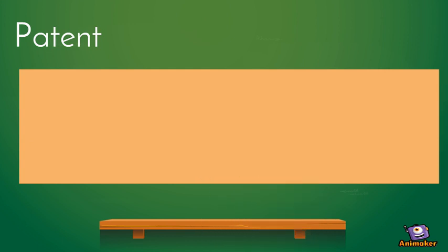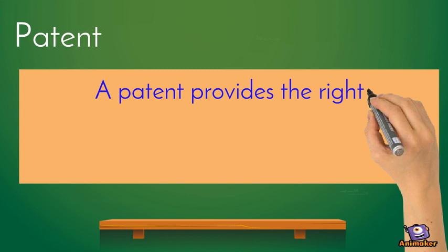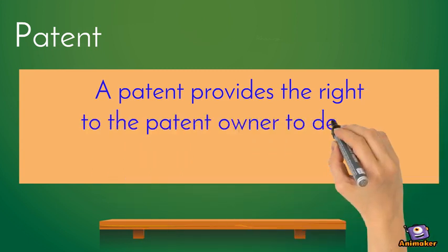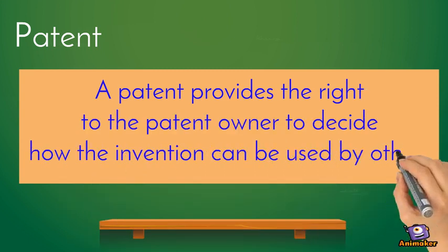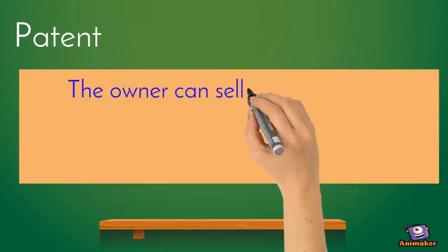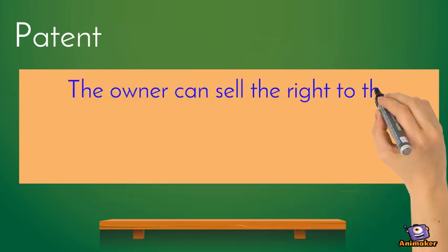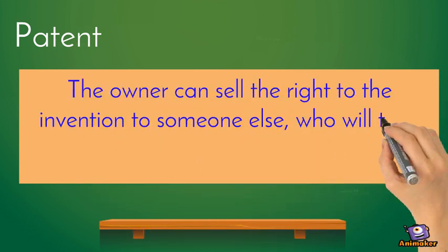A patent provides the right to the patent owner to decide how the invention can be used by others. The owner can sell the right to the invention to someone else, who will then become the new owner of the patent.